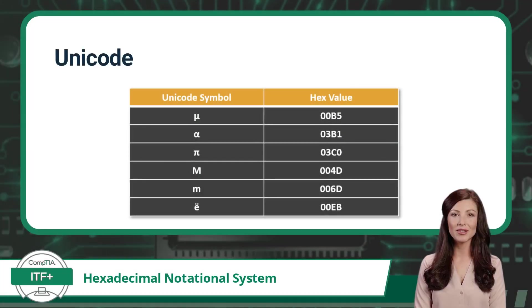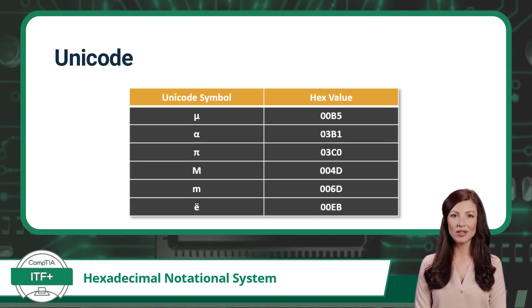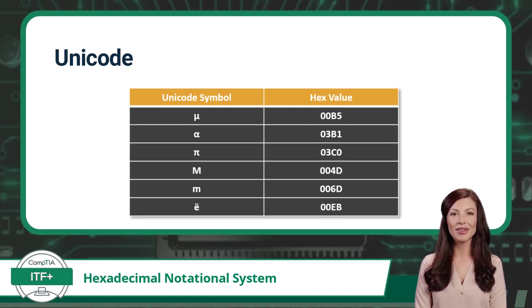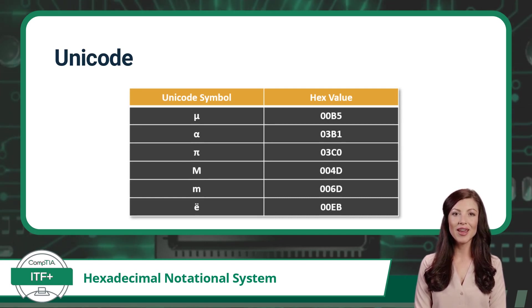Unicode is just one more place you might find hexadecimal notation being used. Unicode is an international encoding standard that converts each letter, digit, or symbol into a unique numeric value in order to be understood by a computing system. These unique numeric values can be represented in binary, or for our current learning purposes, as a hexadecimal value.